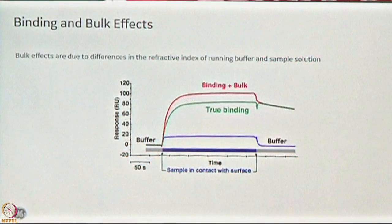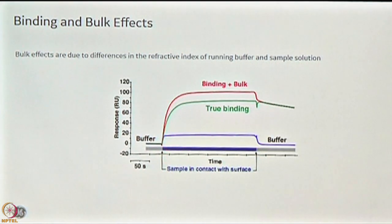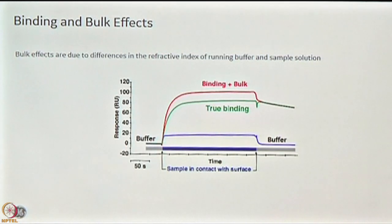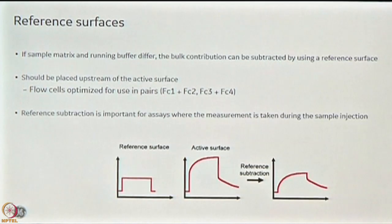This is called the bulk effect. When you pass your analyte, the buffer itself also gives some response units. Looking at the graph: the blue line is just buffer running without anything — it has a small response unit; the red line includes your binding plus the bulk contribution. If you subtract these two you get your true binding. All SPR experiments should have a zero concentration run that is subtracted, and the running buffer must be exactly the same buffer used to make the sample.